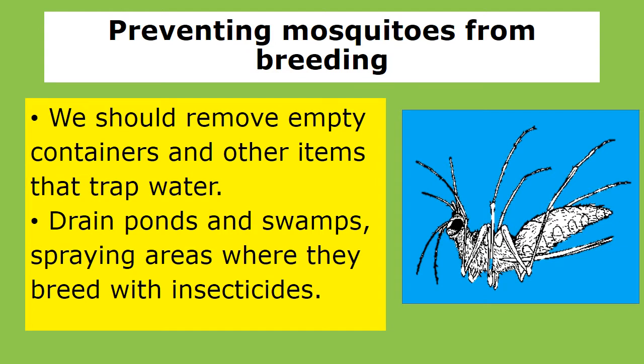Preventing mosquitoes from breeding: we should remove empty containers and other items that trap water, drain ponds and swamps, and spray areas where they breed with insecticides.